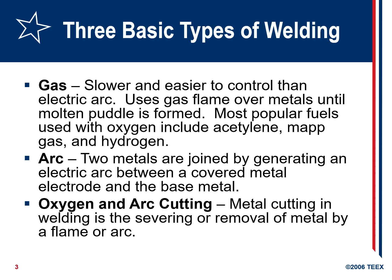There are three basic types of welding: gas welding, arc welding, and oxygen and arc cutting. Gas welding is slower and easier to control than electric arc, using gas flames to heat metals until molten foil is formed. The most popular fuels used include acetylene, MAPP gas, and hydrogen. In arc welding, two metals are joined by generating an electric arc between a covered metal electrode and the base metal. Oxygen and arc cutting involves the severing or removal of metal by a flame.